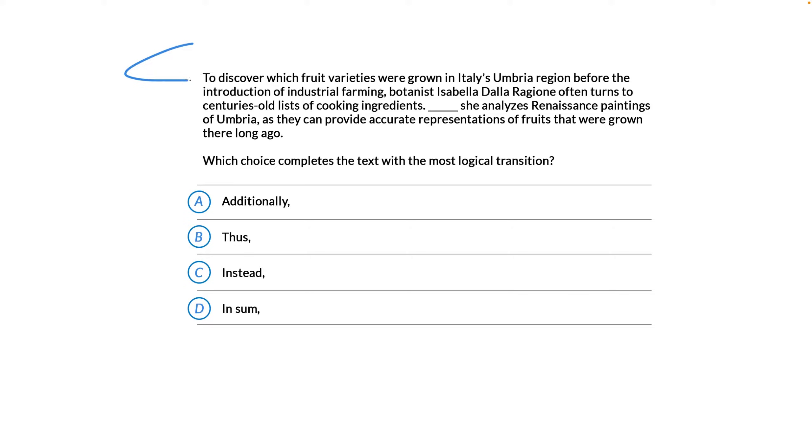Let's take a look at this question from the reading and writing test. To discover which fruit varieties were grown in Italy's Umbria region before the introduction of industrial farming, botanist Isabella Dalla Ragione often turns to centuries-old lists of cooking ingredients. She analyzes Renaissance paintings of Umbria, as they can provide accurate representations of fruits that were grown there long ago. So, which choice completes the text with the most logical transition?